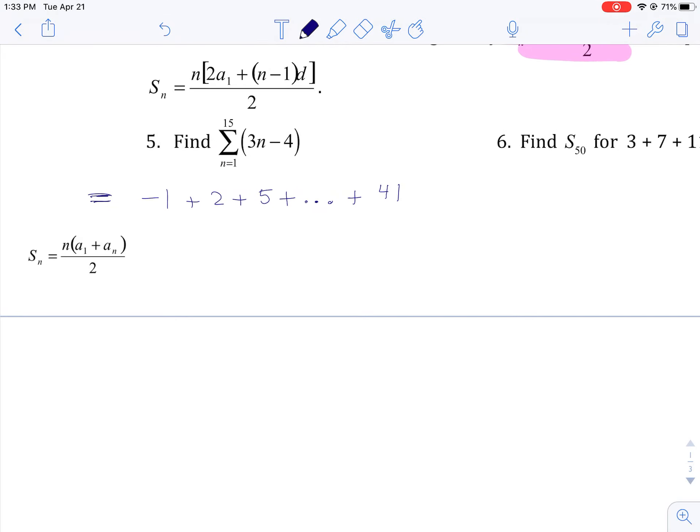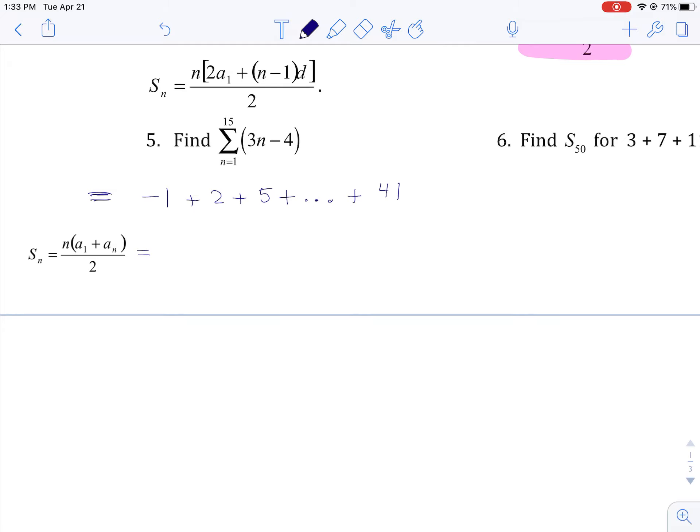So if I want to add those up, to be honest, you could actually write out all 15 numbers and add them up. That wouldn't take too long, but let's use the formula as long as we have it. Here we have 15 terms. The first term is negative 1. The last term is 41, and we'll divide that by 2. And if I put that in the calculator, that gives me 300. So it's a quick way to add up an arithmetic series.